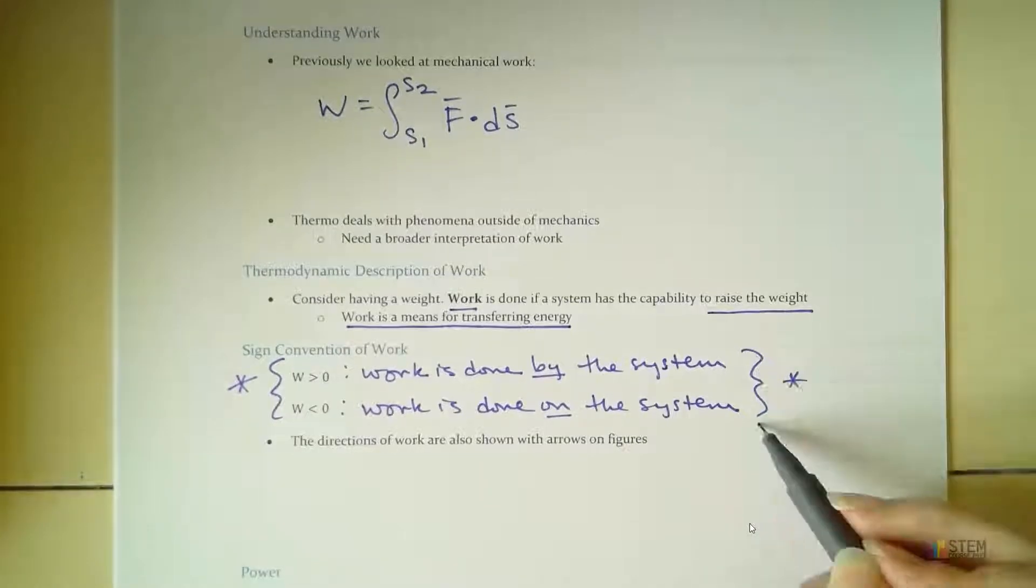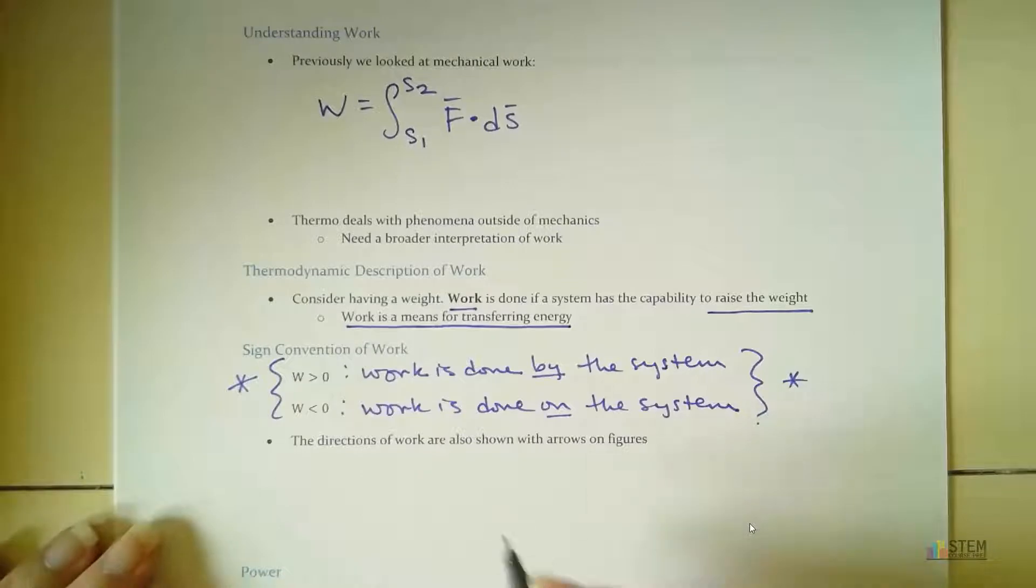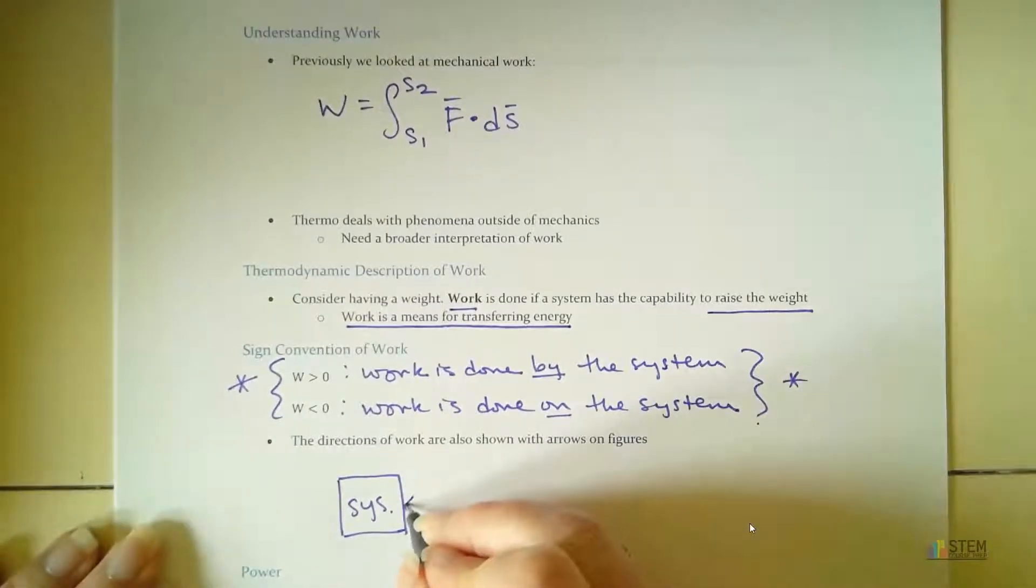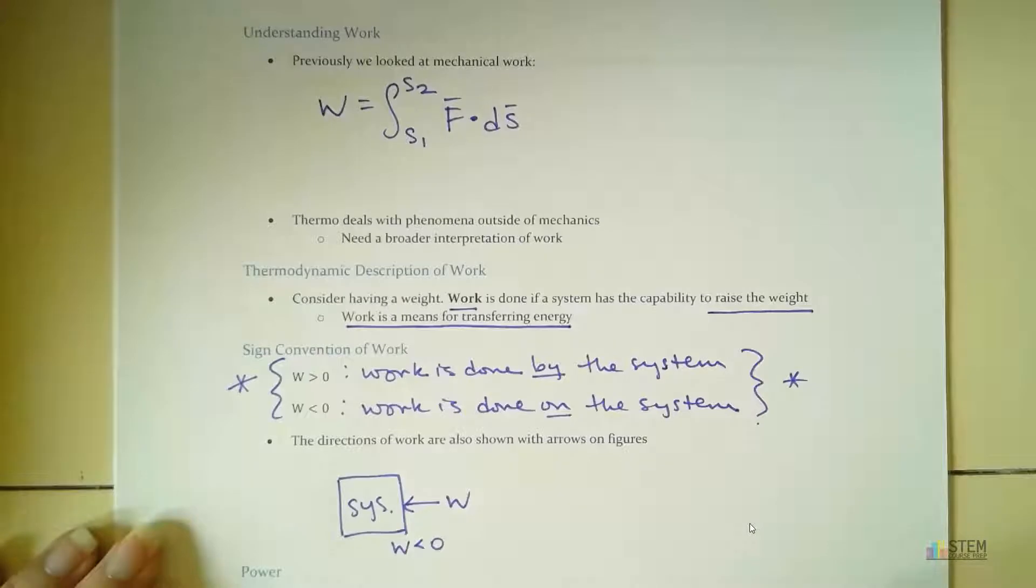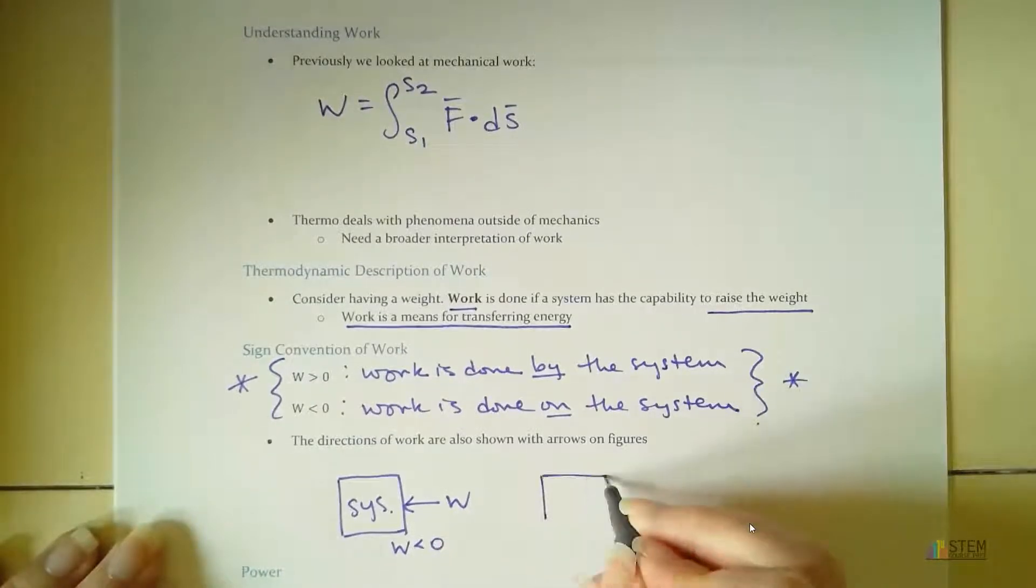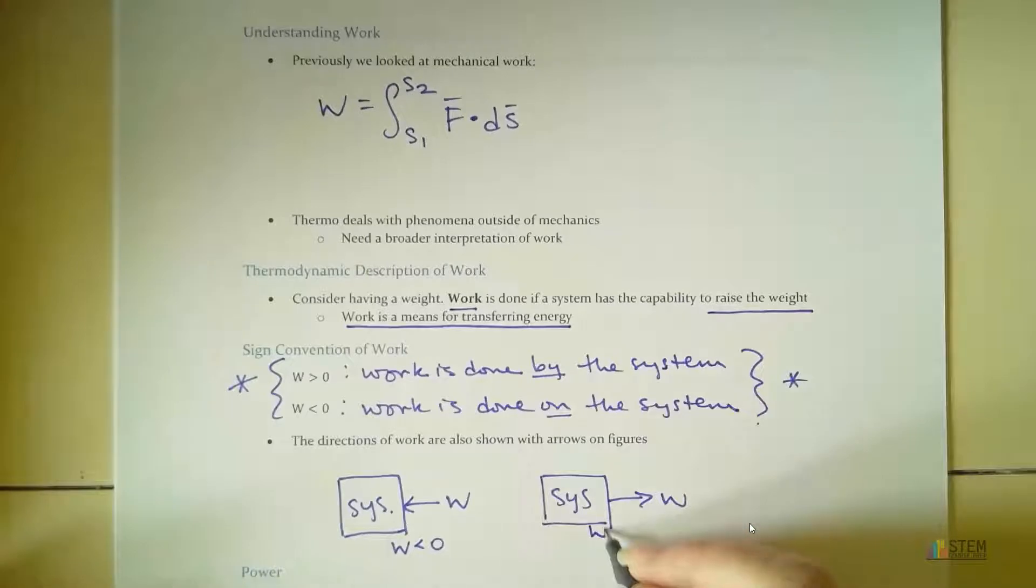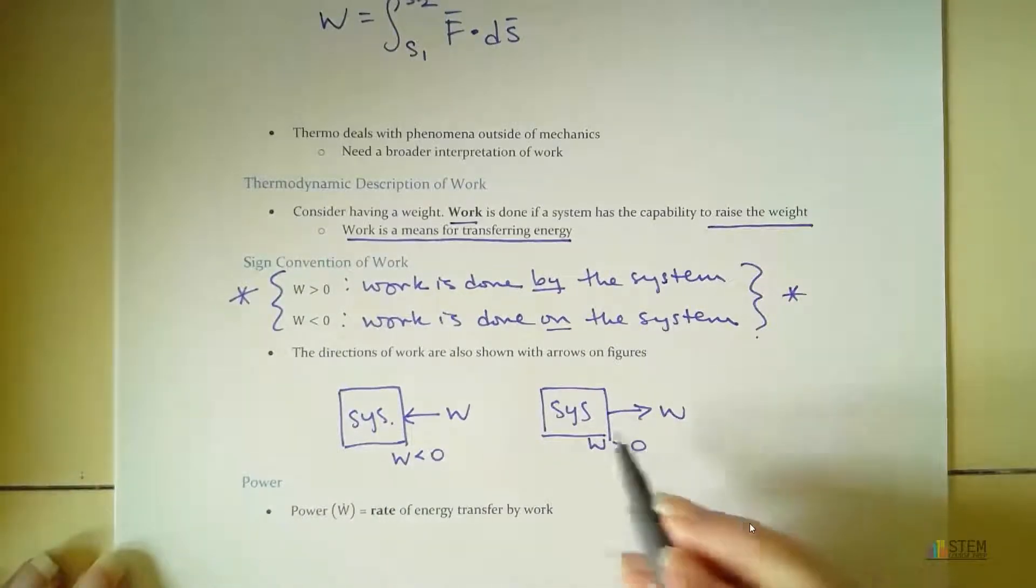All right, but for now, just remember these sign conventions. These are going to be important. Now, we also show directions of work with arrows on our figures. So if I was to draw a box and this represented a system, if I draw an arrow going into that box with a W by it, that means work is less than zero. So this is showing me I've got an external source of work here. Now, if it's drawn the other way, where the arrow is pointing out, that means work is greater than zero. So this is meaning work is done by the system. So we can send energy out. Think about it that way.